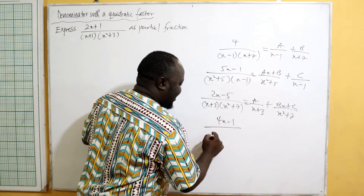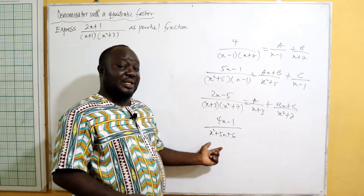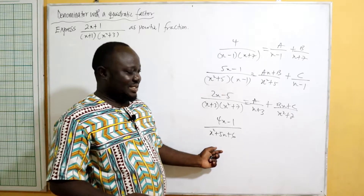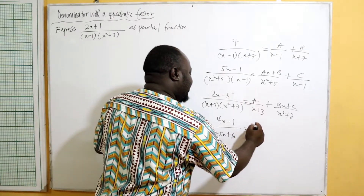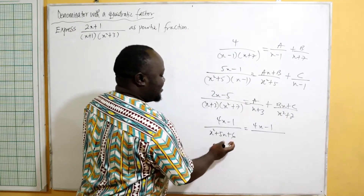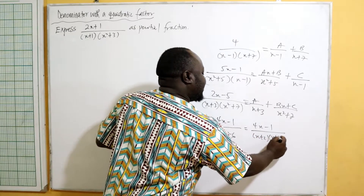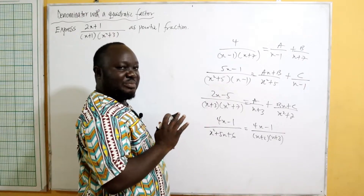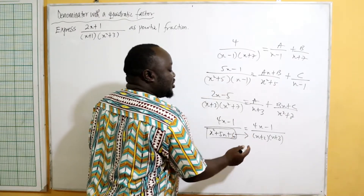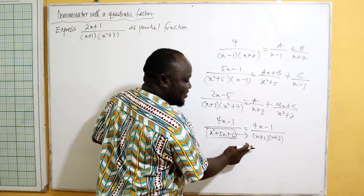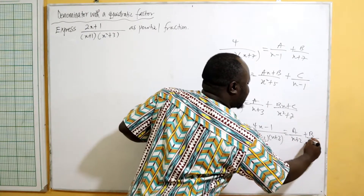Even though you see x squared, this looks quadratic, but if you are smart you realize this quadratic can be factorized. One times six is six; factors of six that add to five are two and three, so x squared plus five x plus six equals x plus two times x plus three. So what appears quadratic can actually be two linear factors.